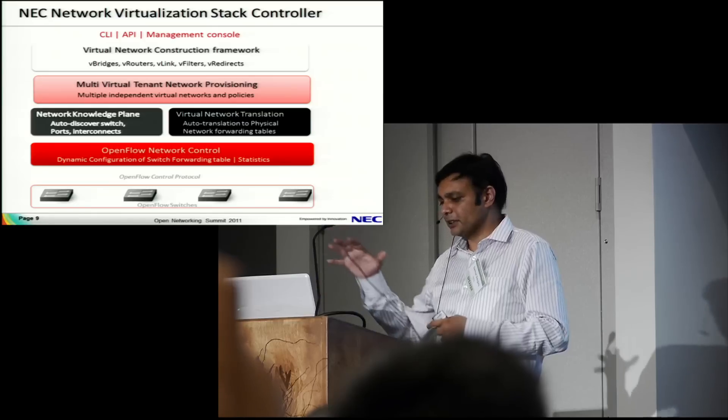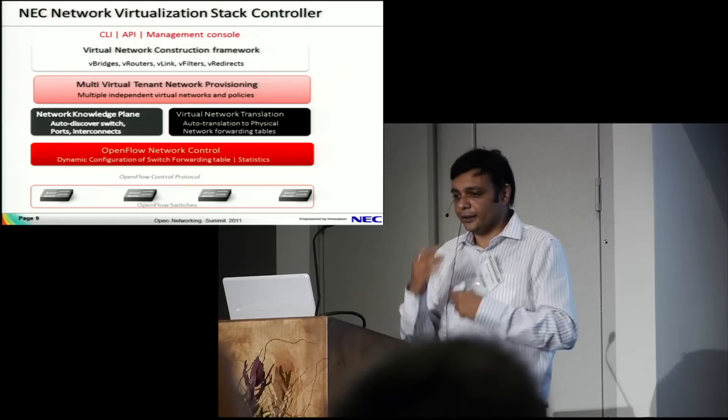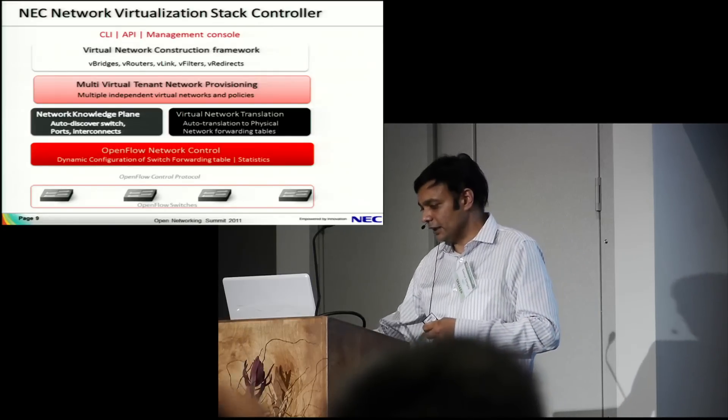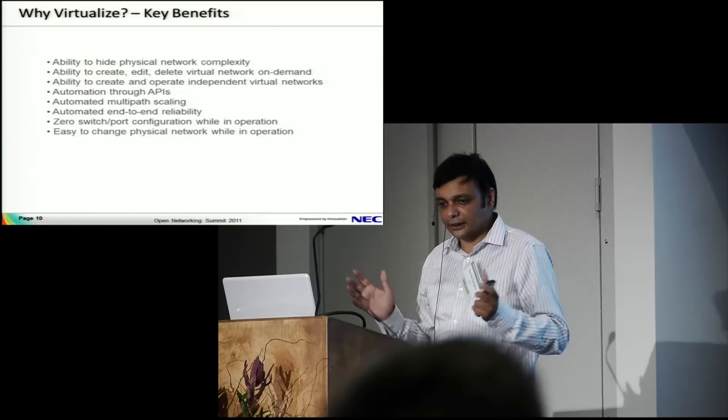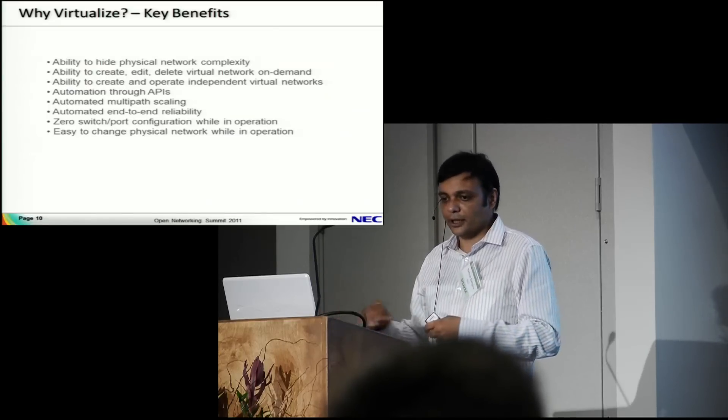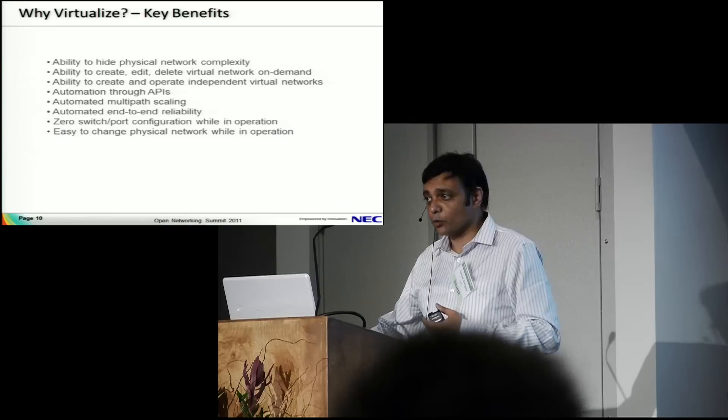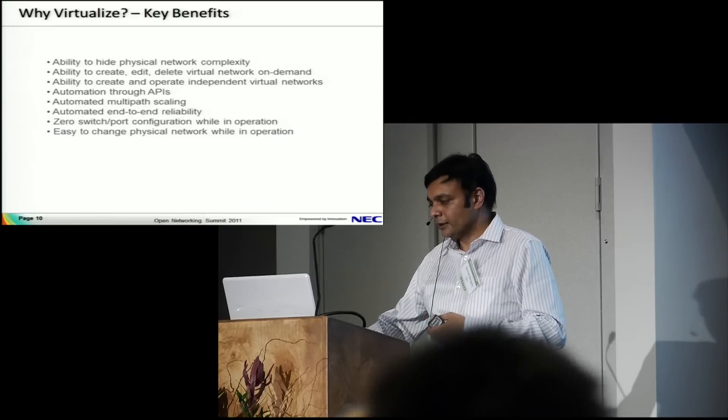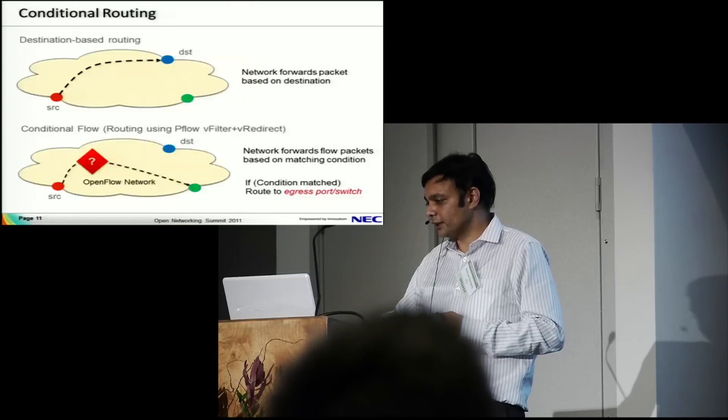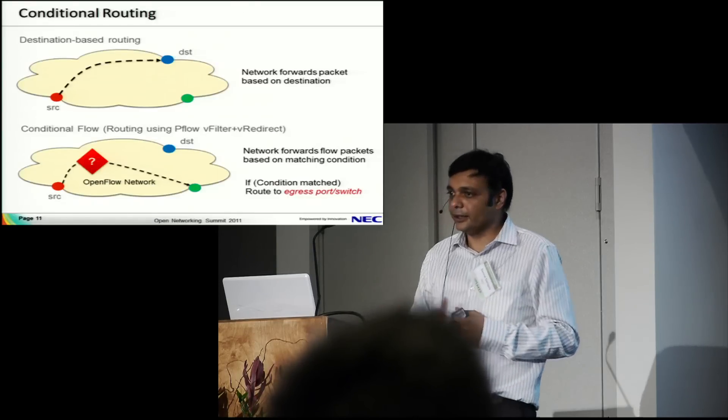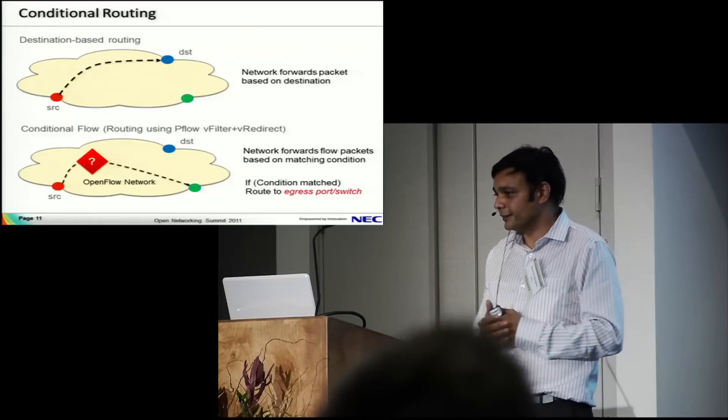When you create that, it's translated to OpenFlow dynamically which programs the switches. These are the benefits - you automate complexities through APIs, you do end-to-end reliability and all the things people want through OpenFlow. That's one of the big benefits of virtualization. I have one last thing which takes things away from the legacy network.